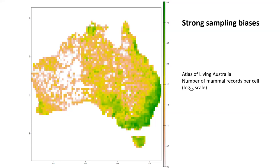We have a lot of occurrence data available built up over time. I've downloaded all mammal occurrence data from the Atlas of Living Australia—many millions of records—and gridded them up showing numbers of records per grid cell on a log 10 scale, up to about 10,000 records in an individual grid cell. There's quite a lot of variation: some areas have no records at all, while coastal areas show very high density of records.